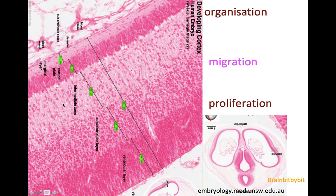If you look very closely in the intermediate zone, you can see that the migrating neurons are more or less in line — they seem to have traveled the same distance from the ventricular layer on their way to the cortex. And the radial glial cells are not just a rope along which the neuron migrates; the neuron actually originates from the radial glial cell.